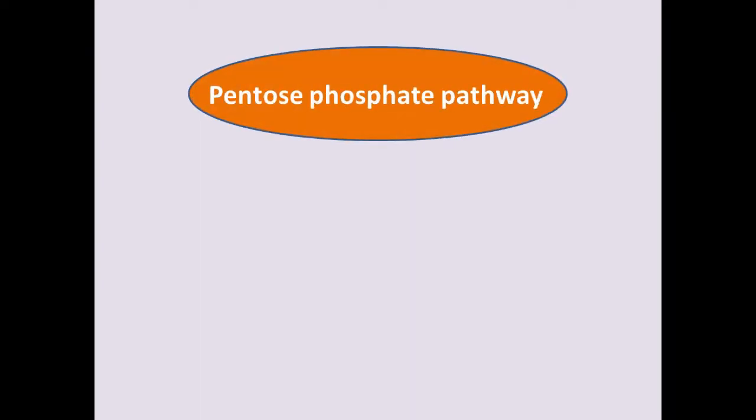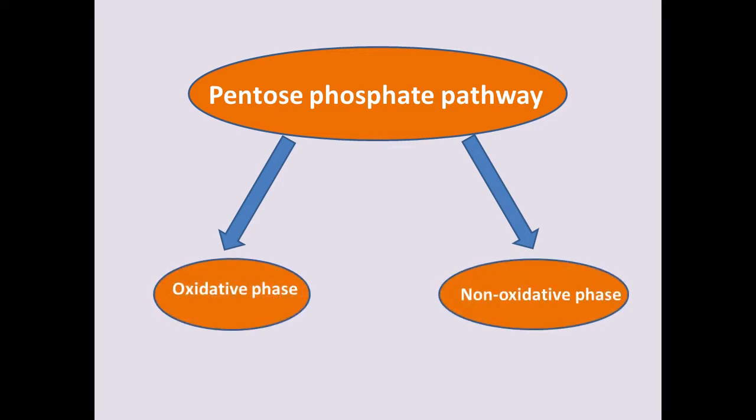The pentose phosphate pathway has two phases. The first is the oxidative phase and the second is the non-oxidative phase. In the oxidative phase, the substrate will undergo the process of oxidation — the breakdown of a molecule as it loses at least one of its electrons. This phase is made up of three steps, which are irreversible.